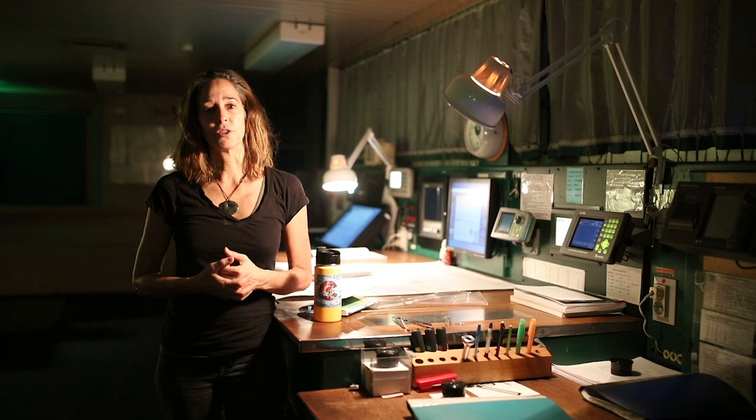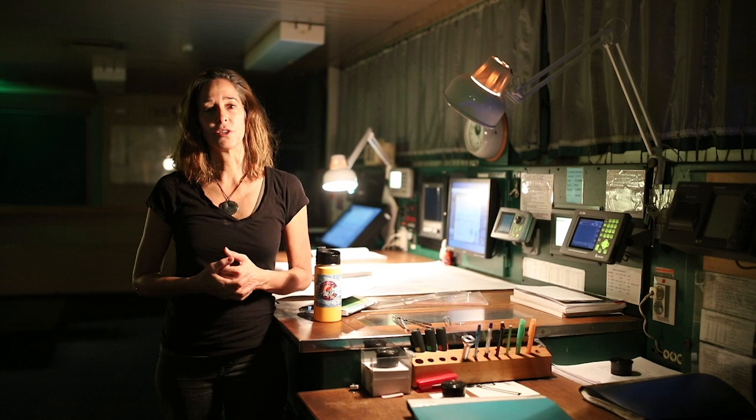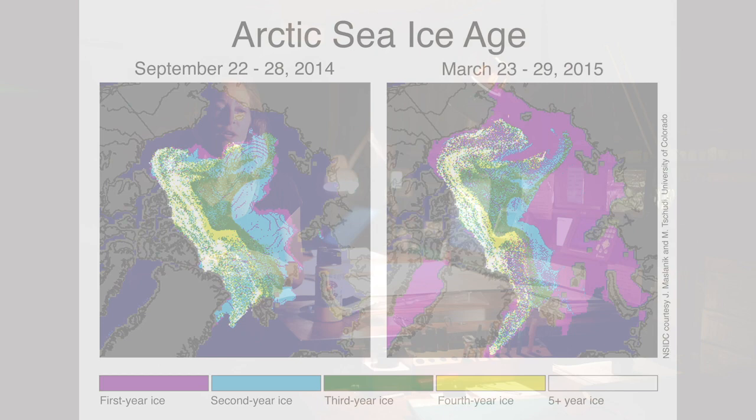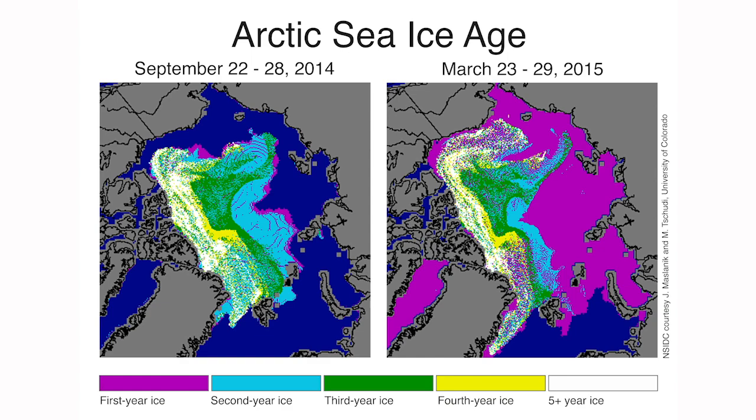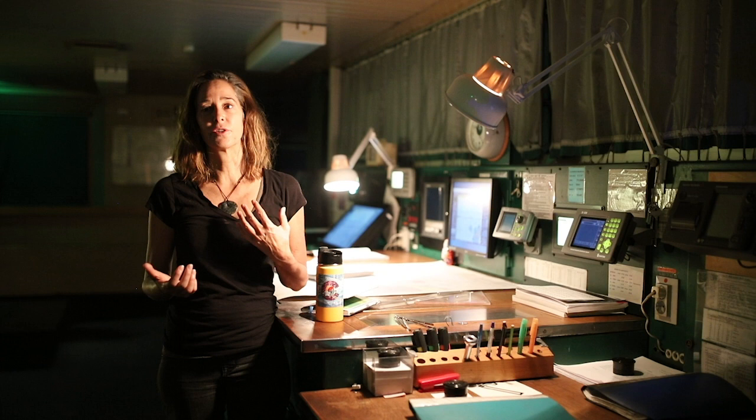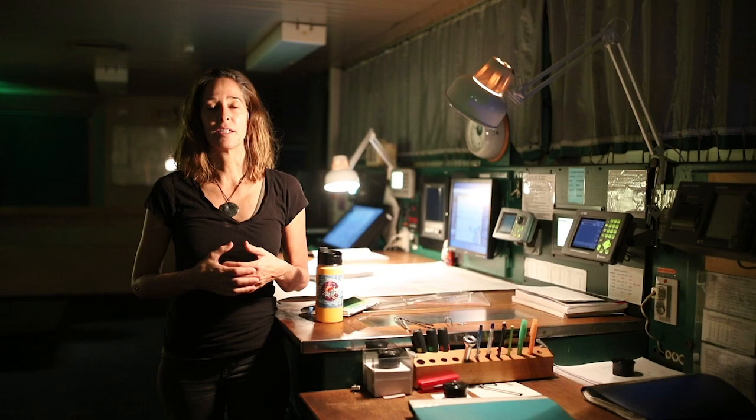The other thing that we've been able to do with this data is we've been able to also track how old the ice is, and I think that is really key towards our understanding of what's happening to the Arctic sea ice cover, because we've seen this reduction in overall age of the ice. So how long the ice survives before it melts out completely. And typically in the early 1980s, for example, most of the Arctic Ocean consisted of old, thick perennial ice. So ice that had been around more than one melt season.